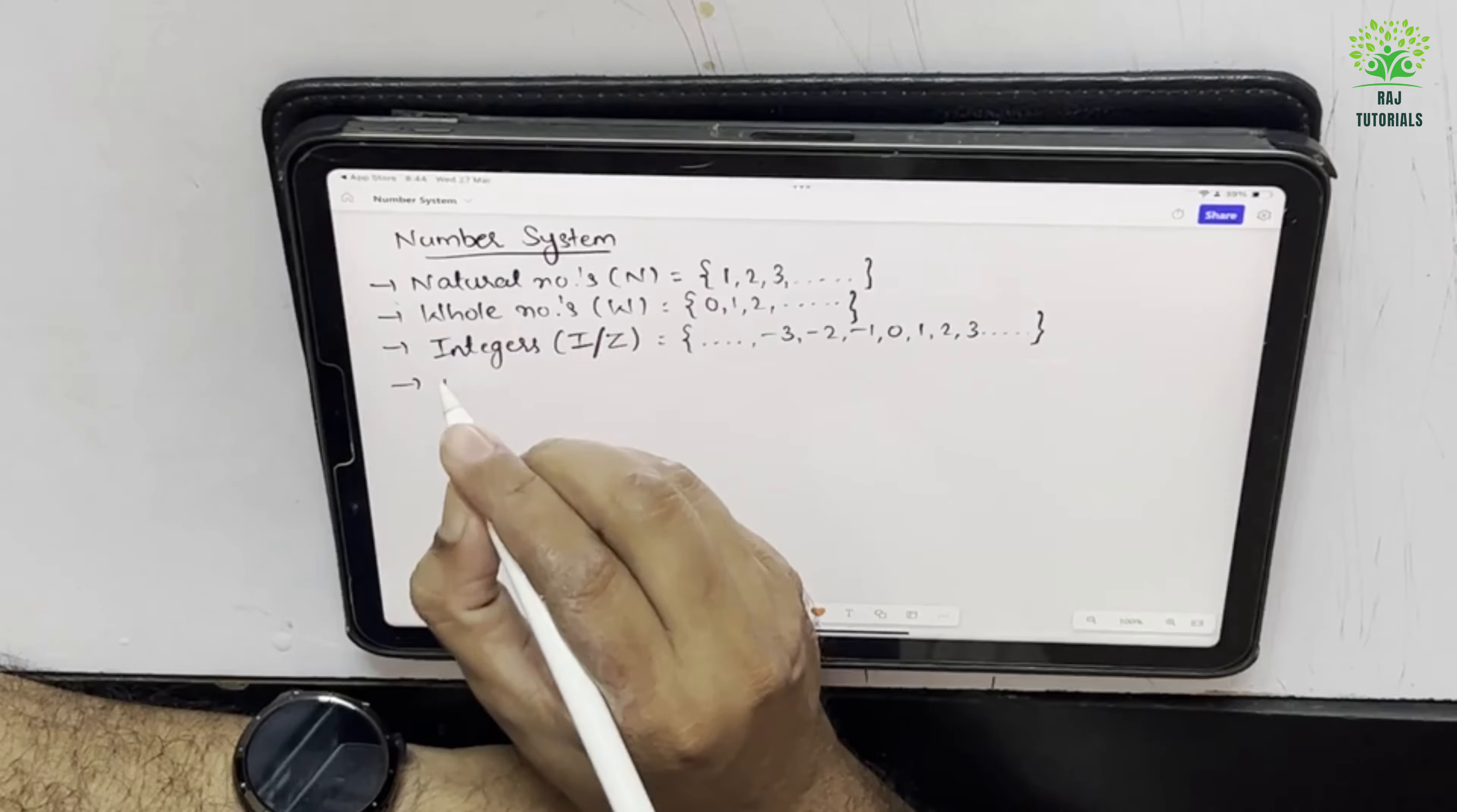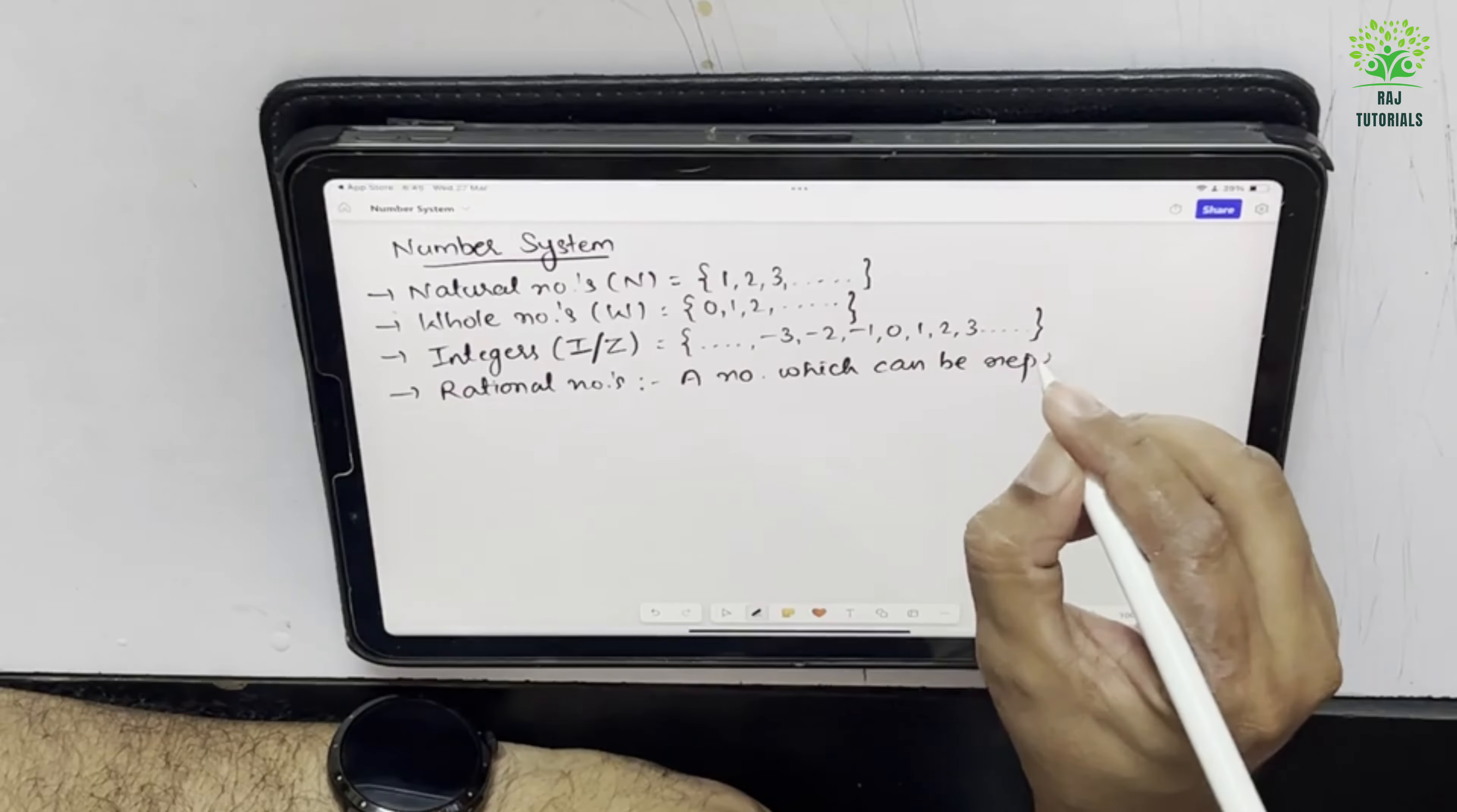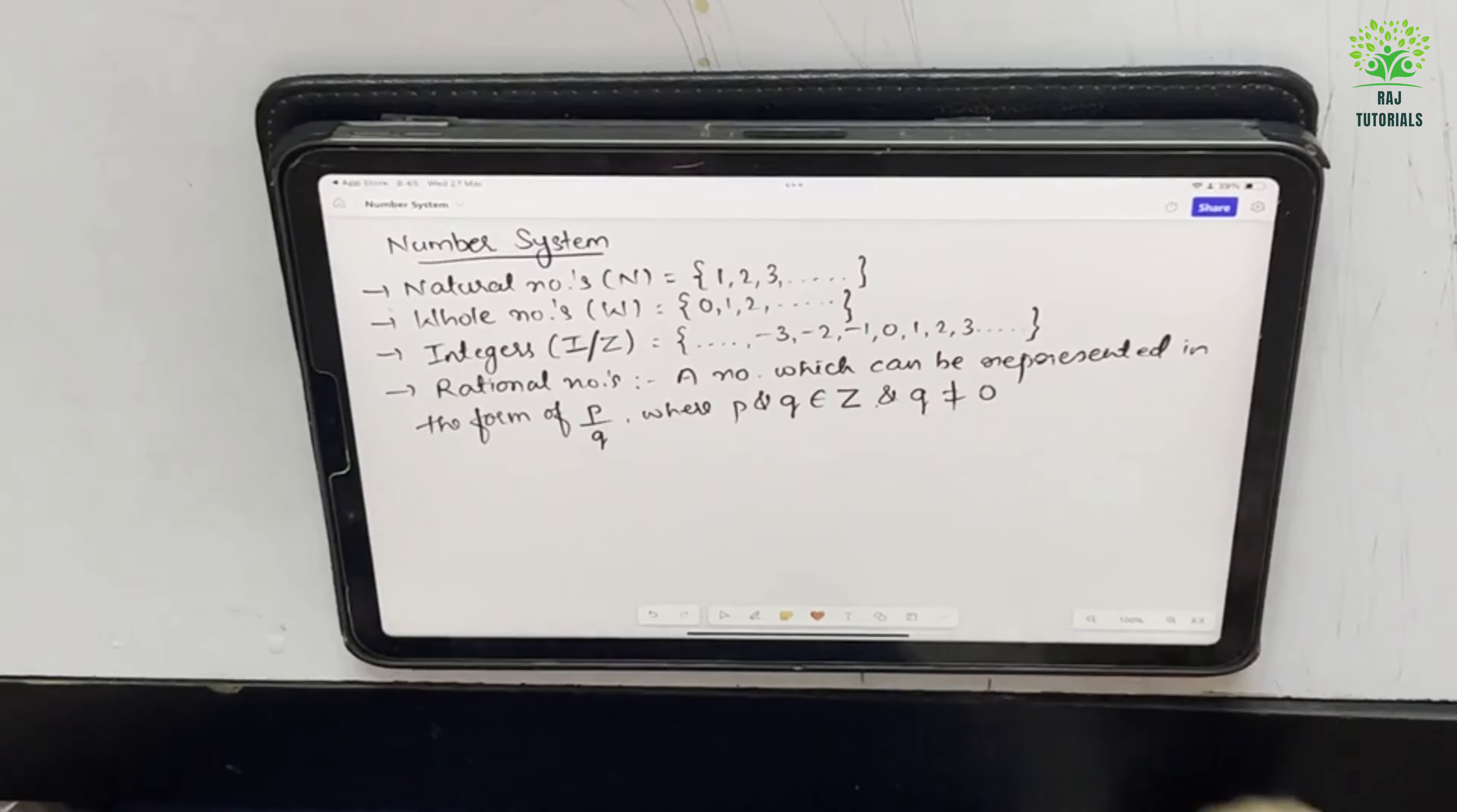Now we are coming to the first topic, that is the rational numbers. The definition of it says that a number which can be represented in the form of P upon Q where P and Q belongs to Z, Z means integer, and Q is not equal to 0.